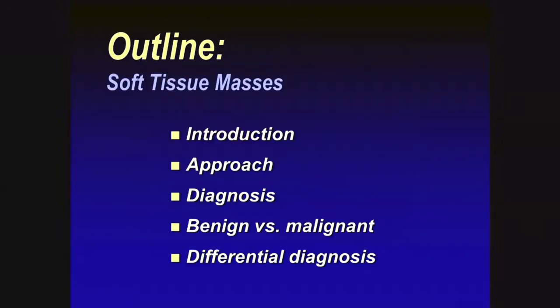At the completion of this session I'd like you to be able to construct a framework for the evaluation of soft tissue masses, recognize ways to establish a diagnosis or differential diagnosis, and when that's not possible, identify features to distinguish between benign and malignant lesions. The way I'll do this is by starting with introductory comments, then a general approach, how we make a diagnosis, and how we use MR imaging to come up with a meaningful differential diagnosis.